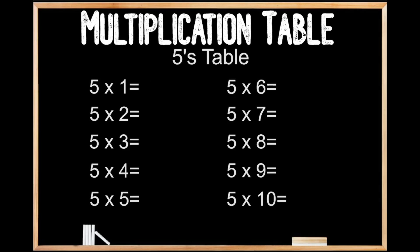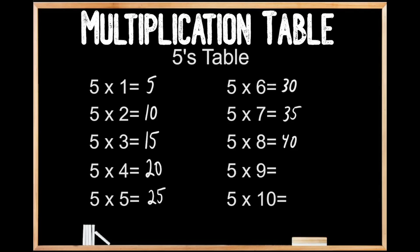5's table. 5 times 1 is 5. 5 times 2 is 10. 5 times 3 is 15. 5 times 4 is 20. 5 times 5 is 25. 5 times 6 is 30. 5 times 7 is 35. 5 times 8 is 40. 5 times 9 is 45. And 5 times 10 is 50.